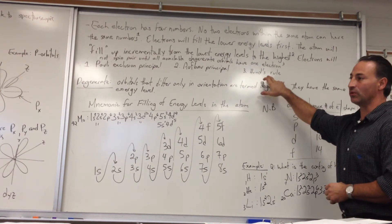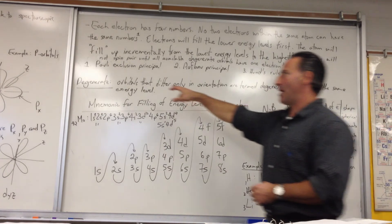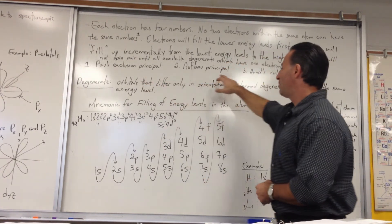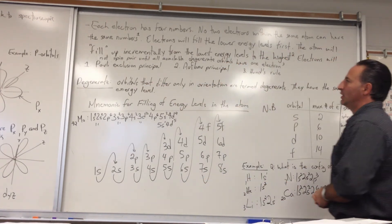And electrons do the same thing. They won't spin pair until they have to. That's called Hund's Rule. So there's three rules. The Pauli Exclusion Principle, the Aufbau Principle, and Hund's Rule.